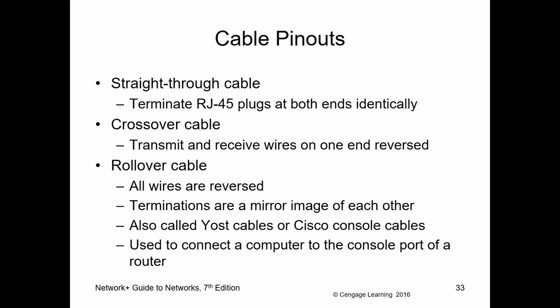A rollover cable has pin 1 connecting to pin 8, pin 2 to pin 7, pin 3 to pin 6, and so on — it's rolled over. It's used primarily to connect a PC or laptop to a Cisco router or switch console port for configuration purposes. To summarize: straight-through for dissimilar devices (PC to switch); crossover for similar devices (PC to PC, switch to switch); rollover to connect a PC serial port to a Cisco router or switch console port.